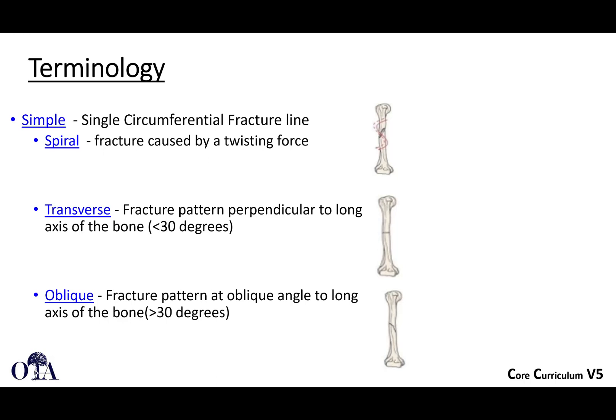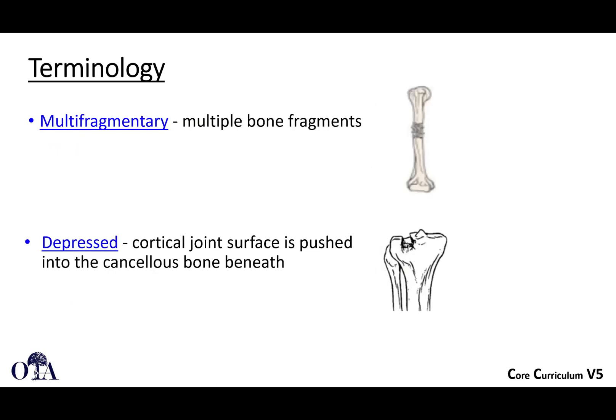A multi-fragmented fracture has many fragments, so we would call that comminuted or multi-fragmentary. Depressed is a term we use — here's a perfect example in the tibial plateau — where instead of a fracture line going off to the side, you have a depression. I like to think of it like a pothole, where the cortical surface has been pushed down into the cancellous bone below, leaving a depressed area of the articular surface. That happens in certain articular segments like the proximal tibia.